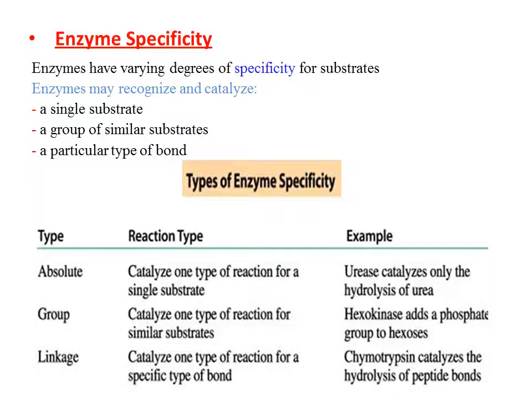Enzyme specificity: an enzyme may recognize and catalyze a single substrate — for example, it works on amino acids and not on glucose. Or it may work on a group of similar substrates, such as a group of amino acids. Or it may act on a particular type of bond, such as bonds containing a double bond.